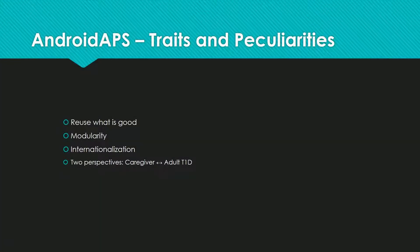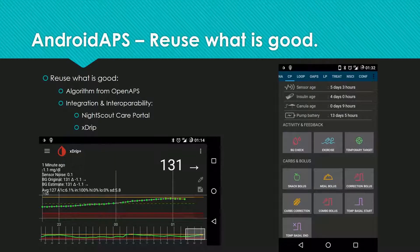What are the traits of Android APS development? As I've already pointed out, we use the algorithms from OpenAPS. A good way to not invent the wheel twice is to interoperate with other apps — we do so with Xdrip and NightScout. Xdrip gives us offline CGM data, and NightScout is used for remote monitoring and cloud backup.